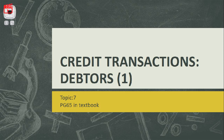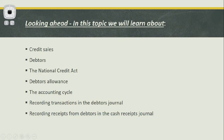In this topic we will learn about credit sales, debtors, the National Credit Act, debtors allowance, how this fits in the accounting cycle, as well as recording transactions in the debtors journal — otherwise known as DJ. This is a new journal that we're going to be looking at, and also recording receipts from debtors in our CRJ.